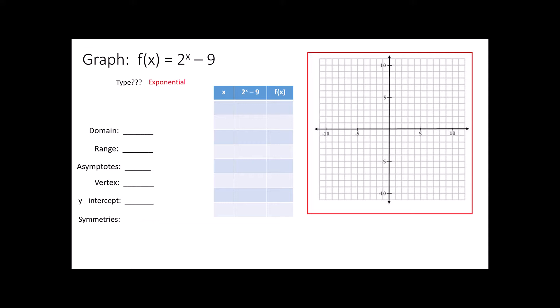That is the key feature of an exponential function — if your x is in the exponent. So you always want to look for that and identify the type. Once I know the type of function it is, I can ask myself: what shape does that function make? Each function family has certain patterns that tend to emerge. Exponential functions always make basically the same shape.